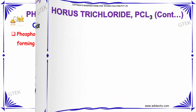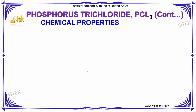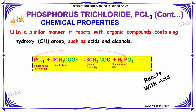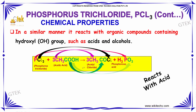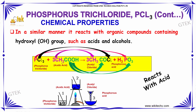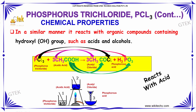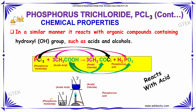In a similar manner, PCl₃ reacts with organic compounds containing the hydroxyl group (OH), such as acids or alcohols. When reacting with acetic acid, PCl₃ gives acetyl chloride and phosphorous acid. Here is the reaction.